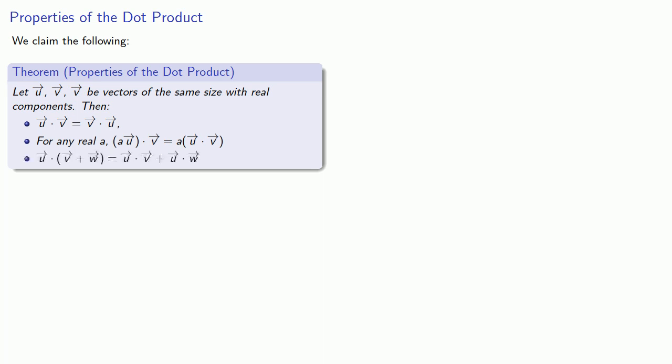And u dotted with the sum v plus w is u·v plus u·w. This is sometimes called the distributivity of the dot product. And since this is a theorem, you know that these things are true.